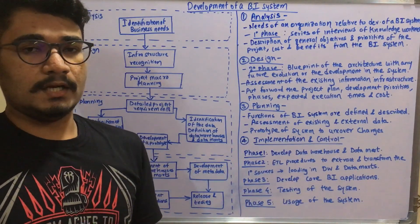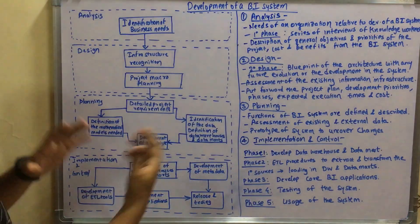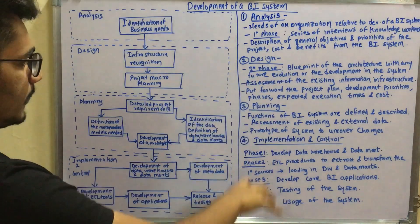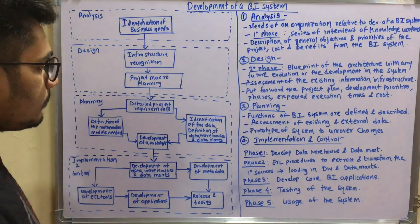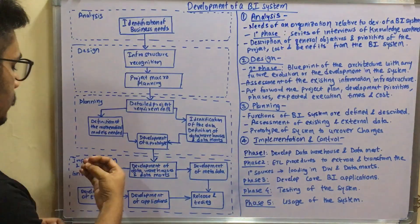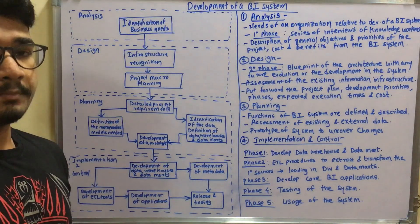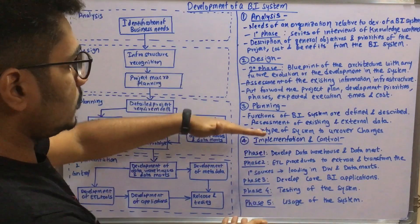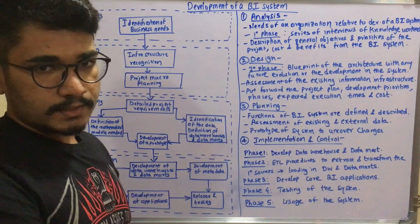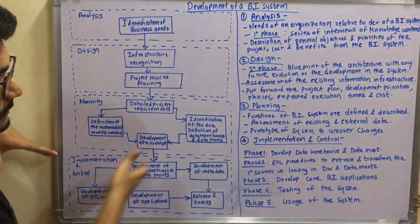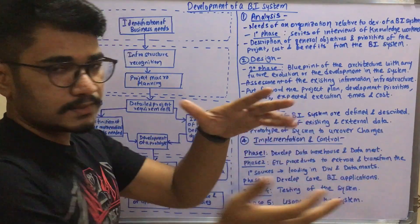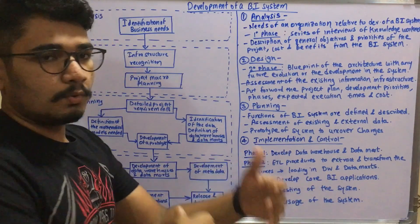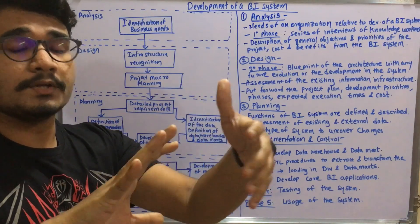The final phase is implementation and control, which contains four different blocks followed by a final release and testing. The blocks are: development of data warehouses and data marts, development of metadata (data about data), development of ETL tools (extraction, transformation, and loading), and development of various applications. In phase one, you develop data warehouses and data marts. In phase two, ETL procedures are performed — extraction and transformation are done together on primary raw data sources, then the data is loaded into the data warehouse and data marts for indexing and maintaining a unified schema.